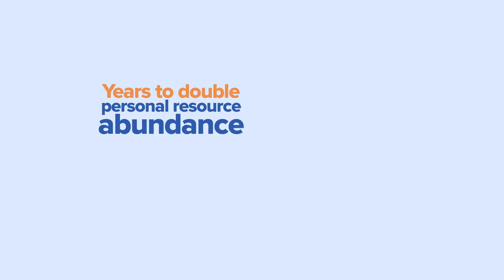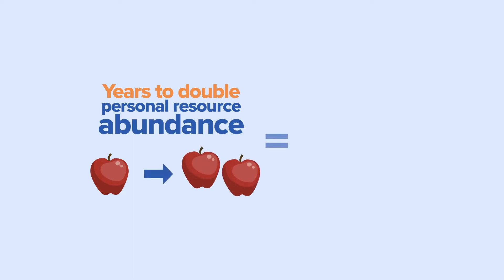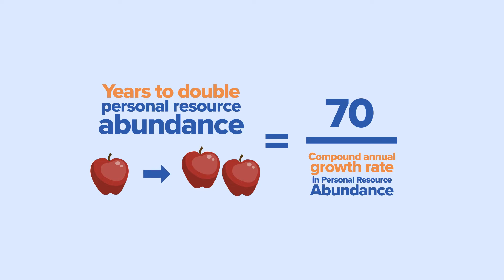To calculate the number of years needed for personal resource abundance to double, we need to divide 70 by the Compound Annual Growth Rate in Personal Resource Abundance.